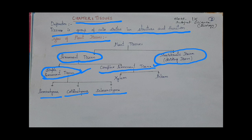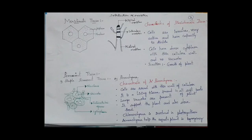Complex permanent tissue is tissue which contains more than one type of cell. There are two types of complex permanent tissue: xylem and phloem.